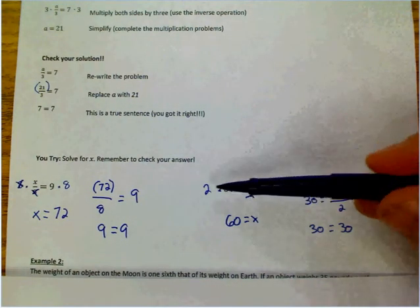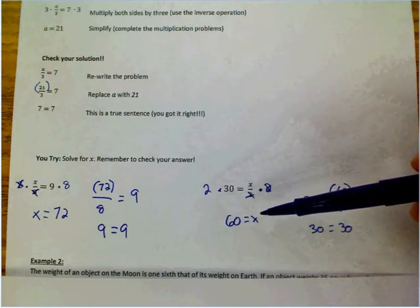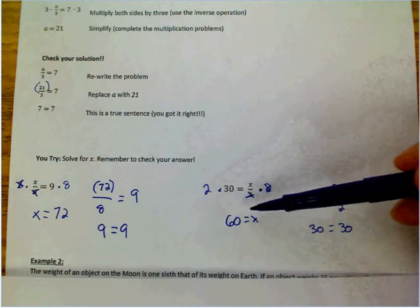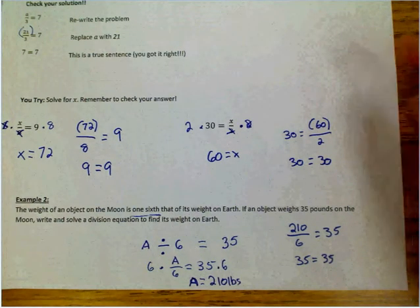Here, we're dividing by 2, so we have to multiply both sides by 2 in order to get our equation. So, x equals 60. And there's our example 2 problem as well.